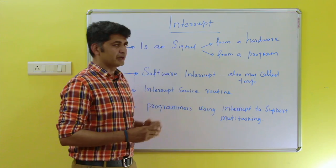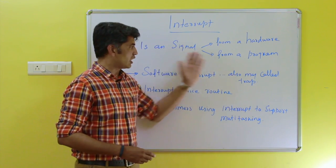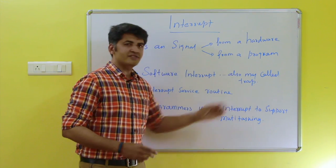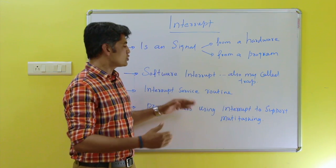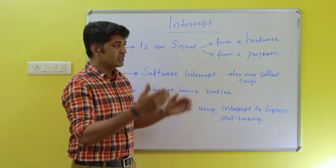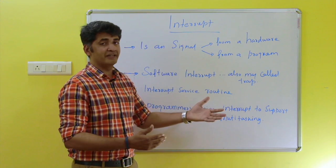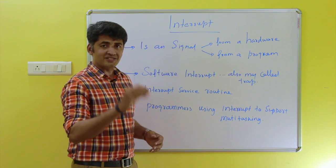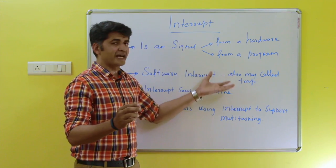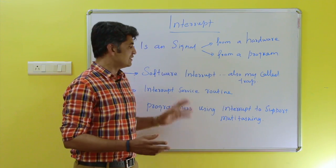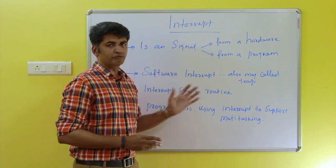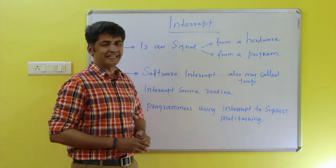This is all about interrupt. There are two types: hardware interrupt and software interrupt. The software interrupt may also be called a trap. Software interrupts can be solved by an interrupt service routine, which is a system program. The operating system keeps a list of system programs and selects the particular service routine according to which interrupt has occurred, supporting the problem solving of the software interrupt.